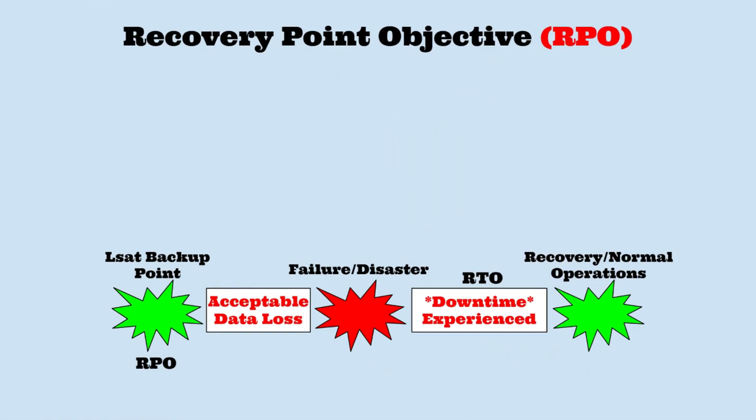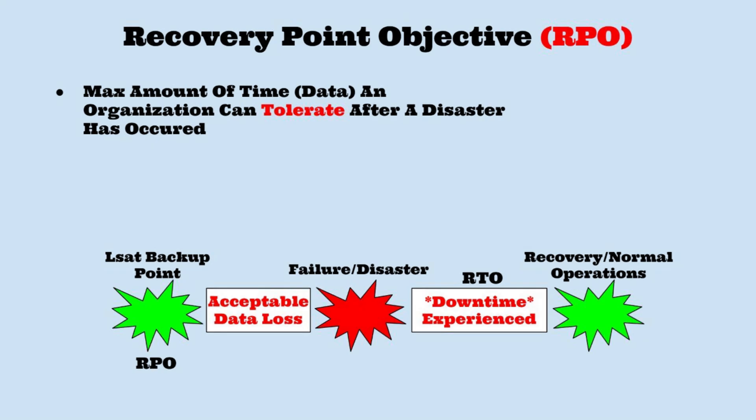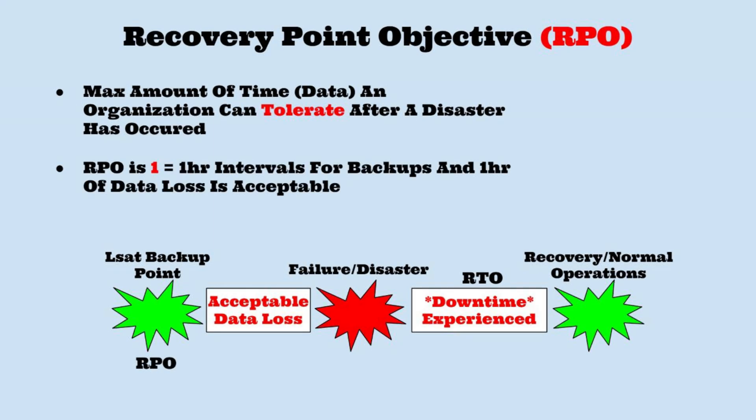A recovery point objective is the maximum amount of time an organization can tolerate after a disaster has occurred. The amount of time is measured by data. This time frame is between the last known good backup solution and the event that caused a failure. Organizations need to figure out what backup solution is closest to when the failure occurred, which can minimize the amount of data loss depending on the intervals of the backups. So when your RPO is equal to one hour of loss, it means your backups should be in one hour intervals because the company can tolerate one hour of data loss.